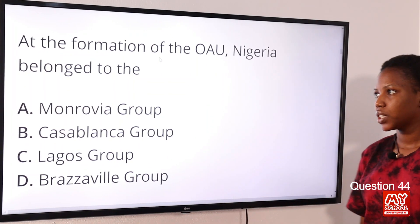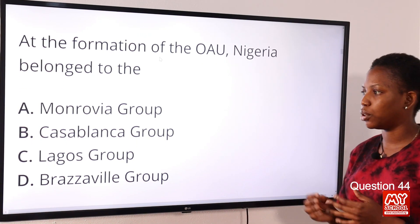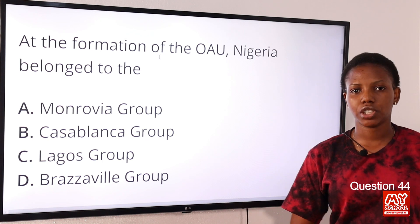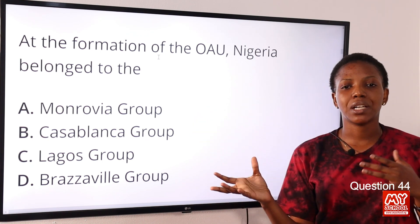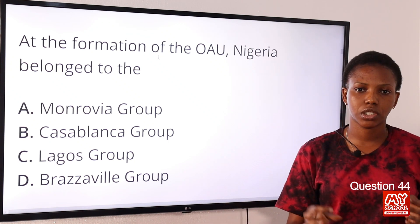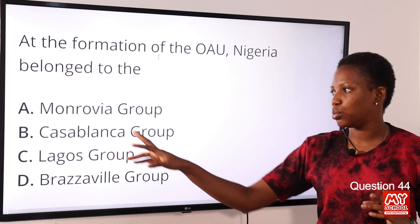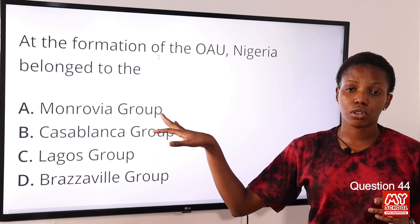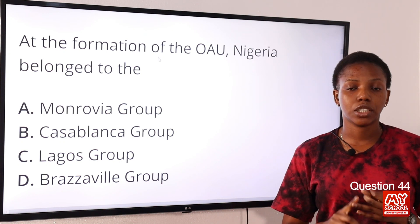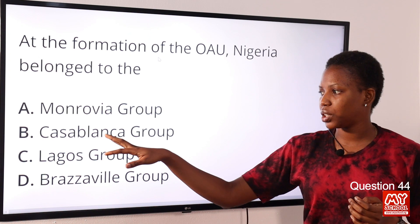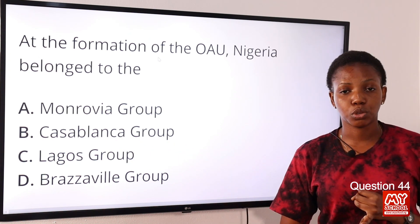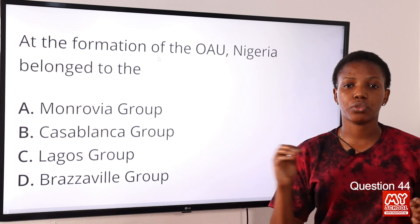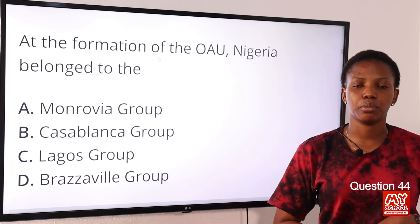Question 44: At the formation of the OAU, Nigeria belonged to the — Option A: Monrovia Group. Option B: Casablanca Group. Option C: Lagos Group. Option D: Brazzaville Group. The answer is Option A, Monrovia Group. Before the emergence of the OAU, there were three groups: the Monrovia Group included Nigeria, Tunisia, Ethiopia, and Liberia. The Casablanca Group included Ghana, Mali, Libya, and Guinea. The Brazzaville Group consisted of Francophone countries.